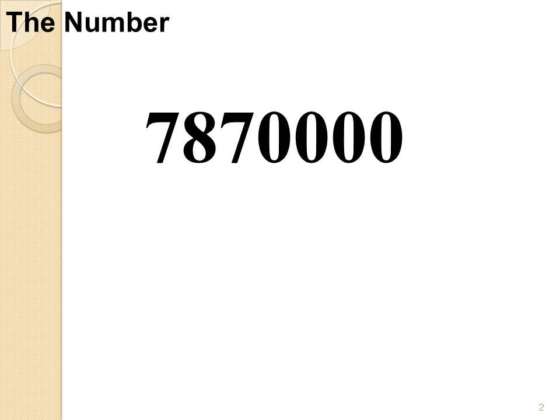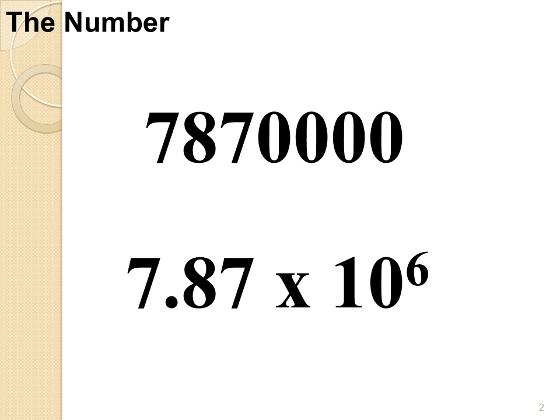In this case, I have 7,870,000, and I can convert that into 7.87 times 10 to the sixth. But what did I just turn it into, and how did I do it?